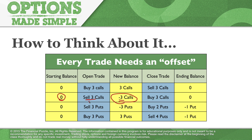So if we sell three call options to open the trade, our new balance is minus three calls. To close the trade, we just go buy three call options, and our new ending balance is zero. It's pretty straightforward.